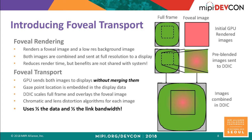In foveal transport, we ask the GPU to keep the images separate and send them as a concatenated image to the display driver chip. The gaze point — where your eye is looking — is embedded in the display data, so the display driver chip knows how to center the foveal image over the background image. The DDIC also scales the full-frame image as part of the overlay, and chromatic aberration and lens distortion can be processed at the eye's actual position, increasing accuracy. Foveal transport uses half the data and half the bandwidth.